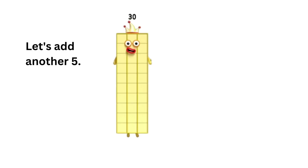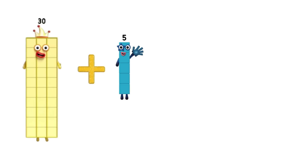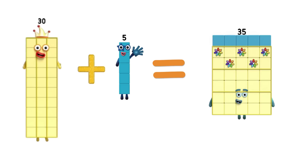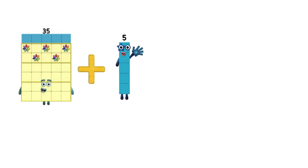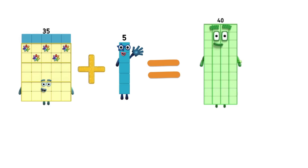Let's add another five. 30 plus five equals 35. Let's add another five. 35 plus five equals 40.